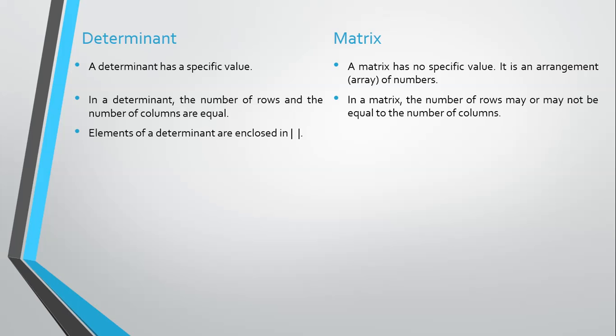Elements of a determinant are enclosed in two vertical pipe symbols. Elements of a matrix are enclosed in square brackets, round brackets, or curly brackets.